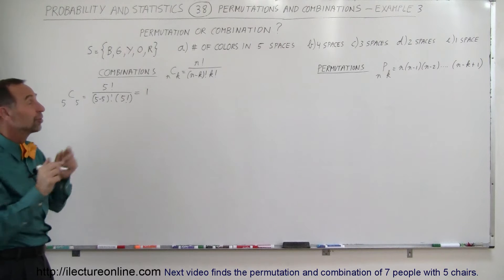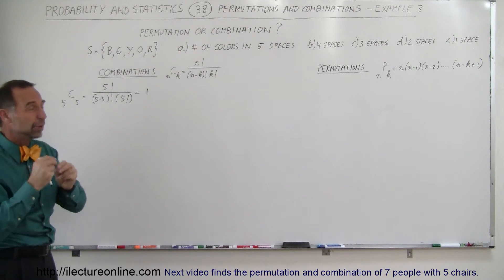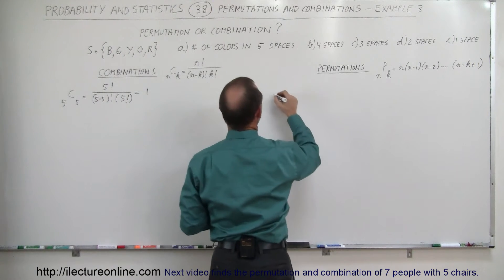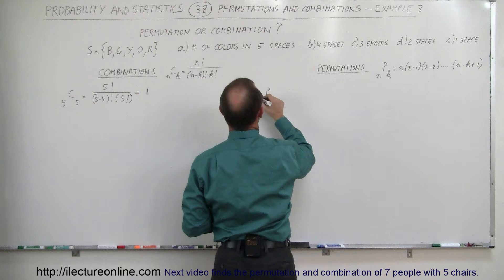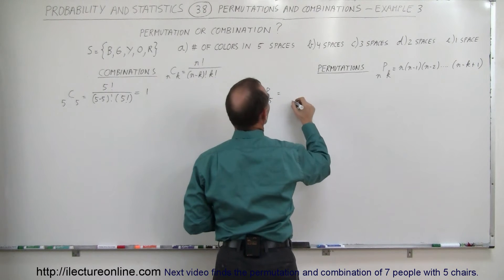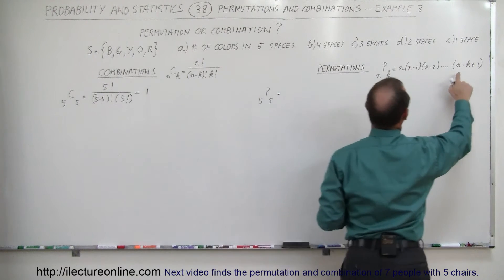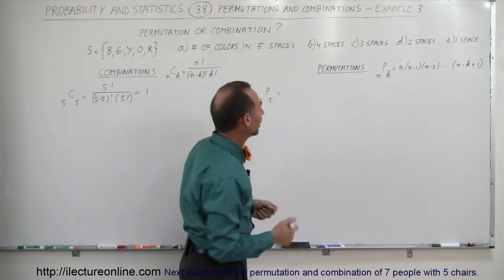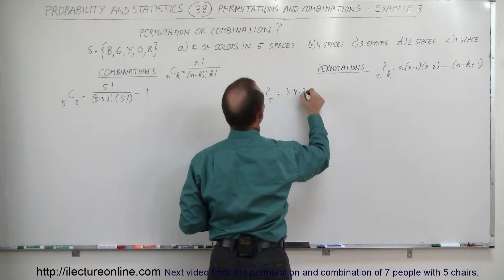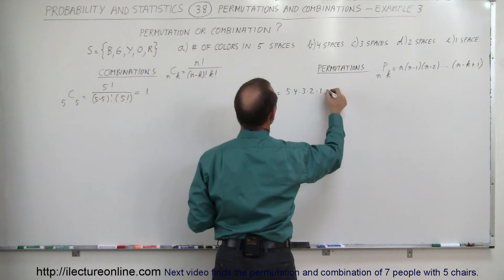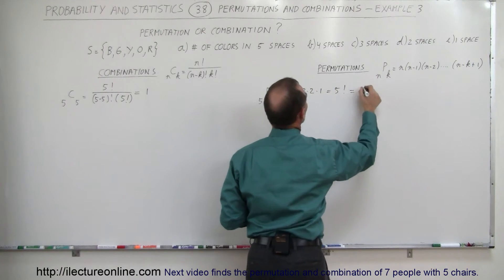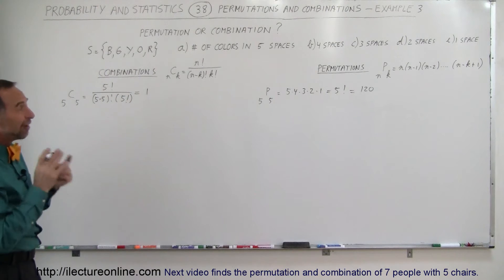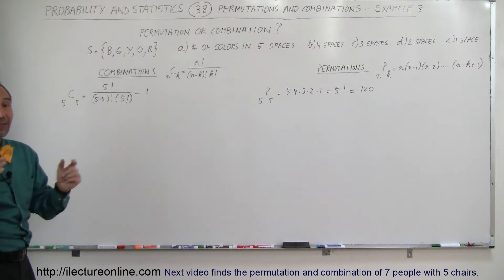How many permutations are there? The same five colors can be rearranged in a number of ways. Using the permutations equation, P(5,5): when we put five here, that's five minus five which is zero, plus one is one — so we go all the way down to one. That means five times four times three times two times one, which is basically five factorial, equal to 120. There are 120 different ways to take five colors and rearrange them in five spaces.